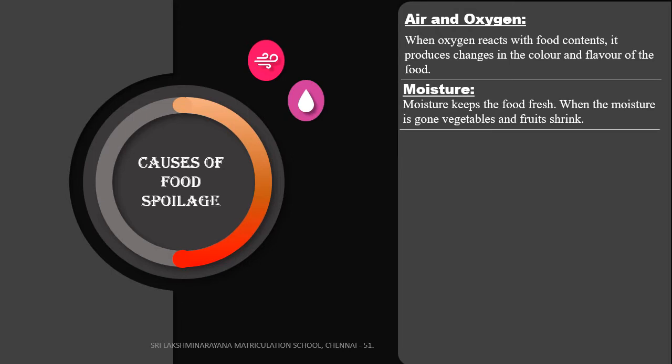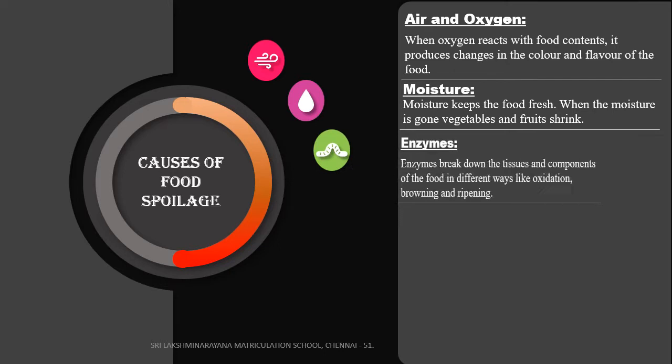Next, moisture. Moisture keeps the food fresh. When the moisture is gone, vegetables and fruits shrink. Due to evaporation, moisture loss occurs in food like meat, fish and cheese. Third, enzymes — enzymes break down the tissues and components of the food in different ways like oxidation, browning and ripening, causing the food items to decay.